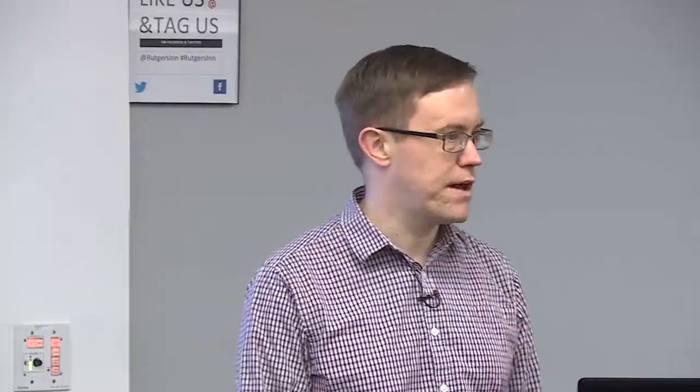It's secure multi-party computation because the parties want to make sure their inputs are not found out by the other parties beyond what's implied in the output. And you want to make sure, if possible, that nobody can cheat and change the answer to something that's not correct based on the input and the function that you've agreed to compute together.